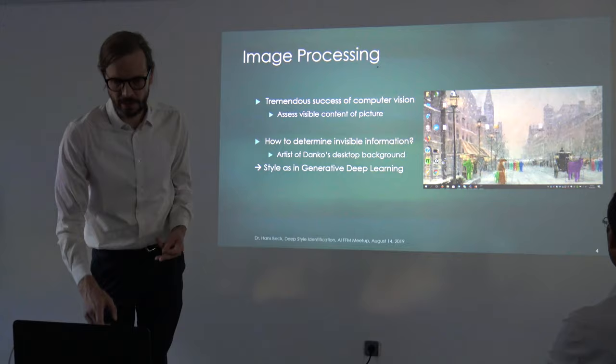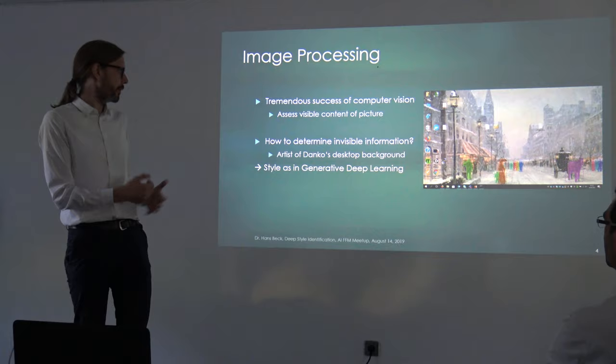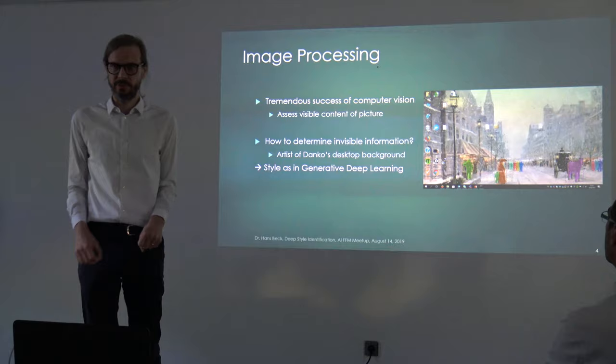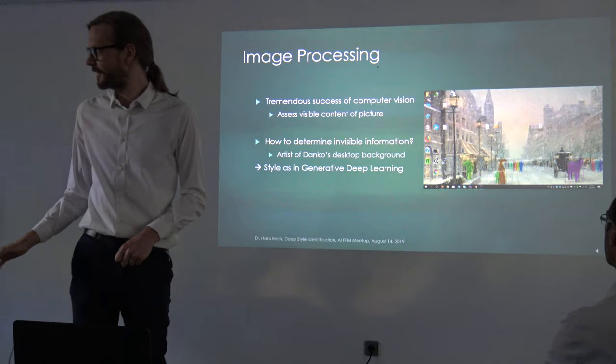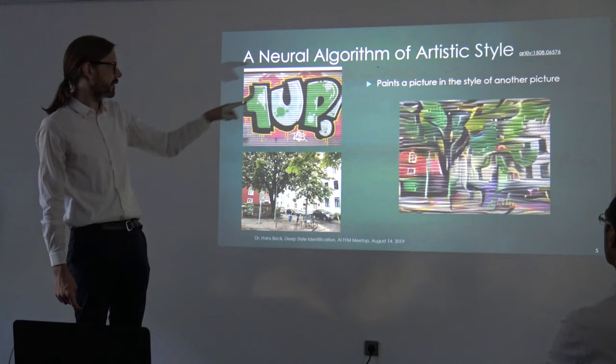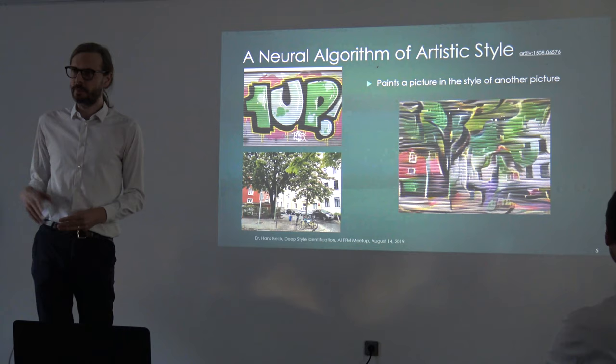But now what's with our problem? How do you determine this invisible information? It's nowhere written in this desktop background that the artist is nowhere written there. So what we're going to do here is use the style of this picture, and then use the style as it is used in generative deep learning. The paper that I mainly used was this: "A Neural Algorithm of Artistic Style" — ArXiv, 2015. Not super old, but still simple enough that you can go through it on your own. Unlike papers now that need thousands of GPUs, this works on this laptop.